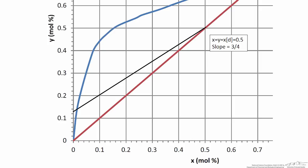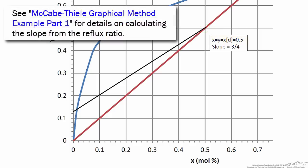Our operating line for this case is bound by the point x = y = xD = 0.5. We've plotted that point here. With a reflux ratio of 3, we calculate a slope of 3/4 for our operating line.